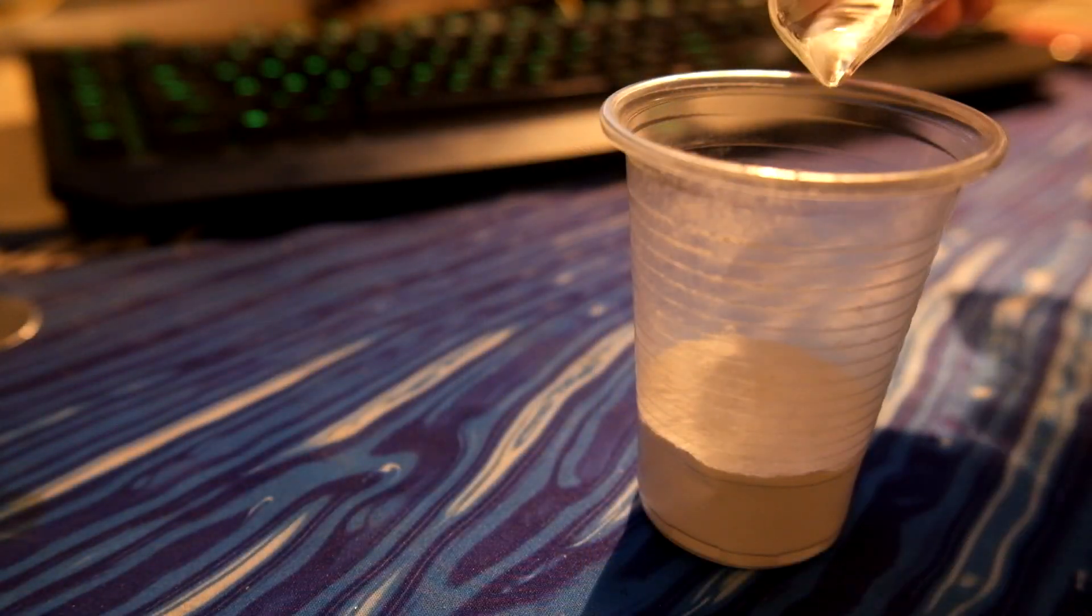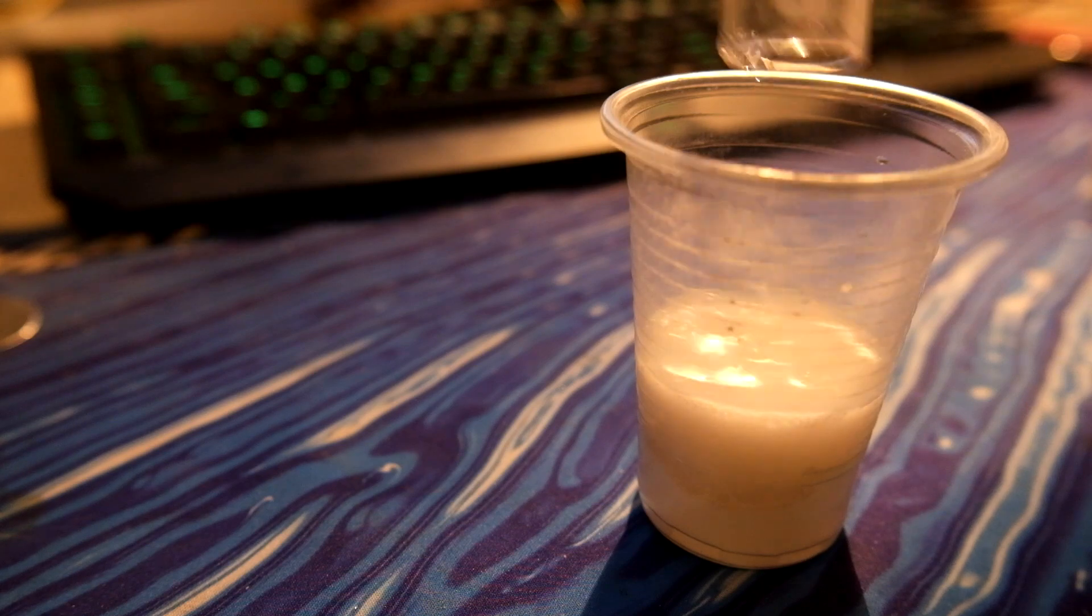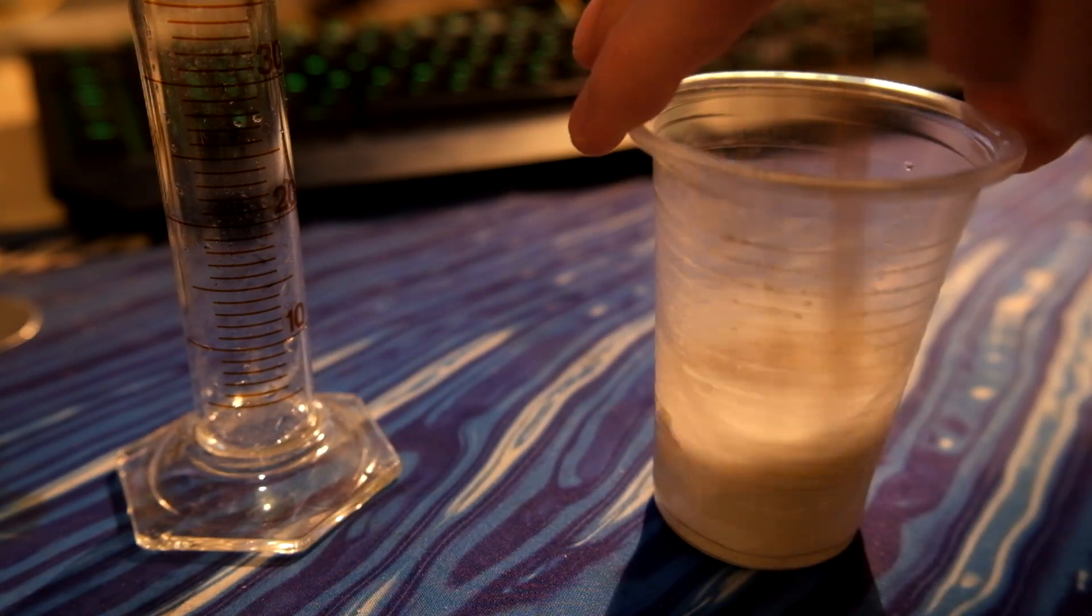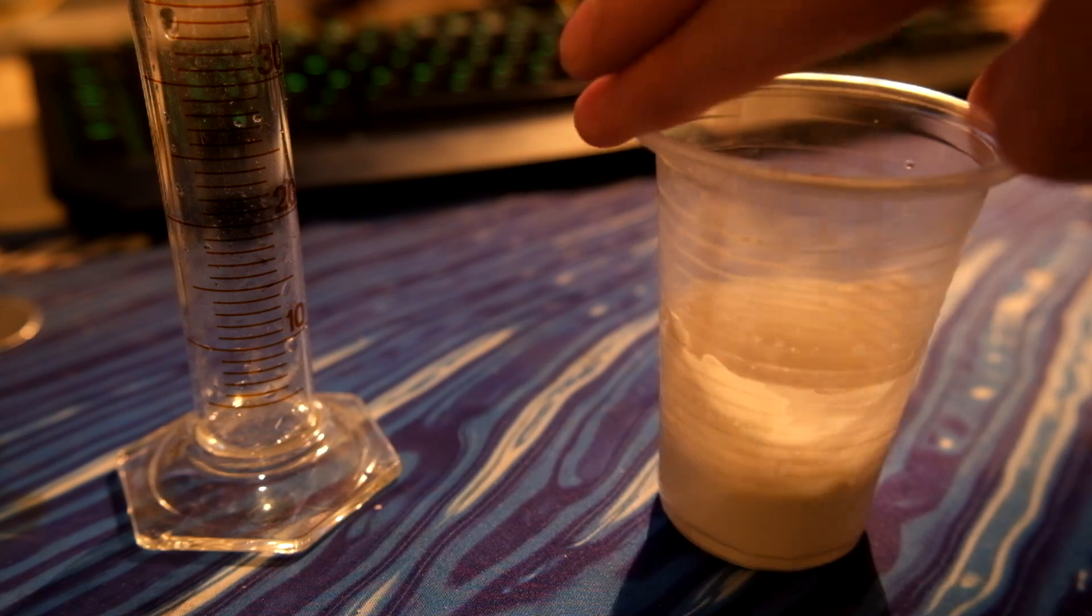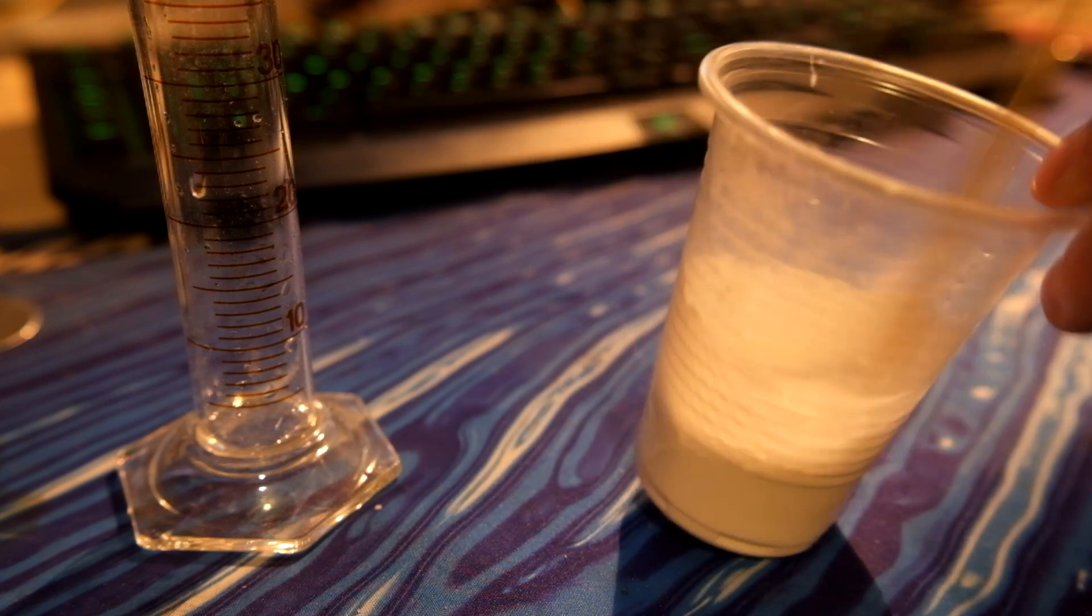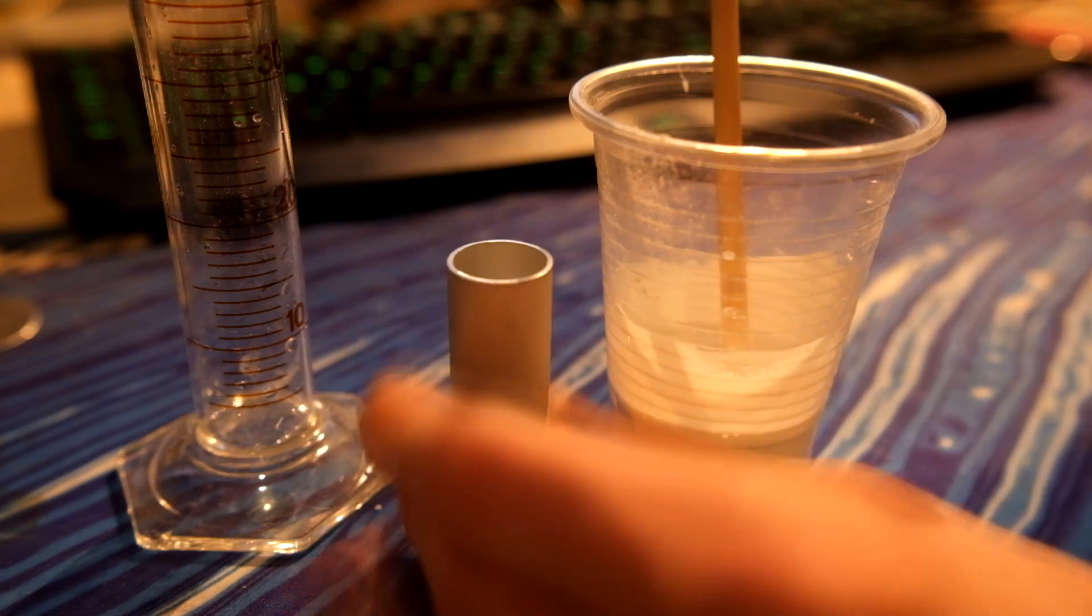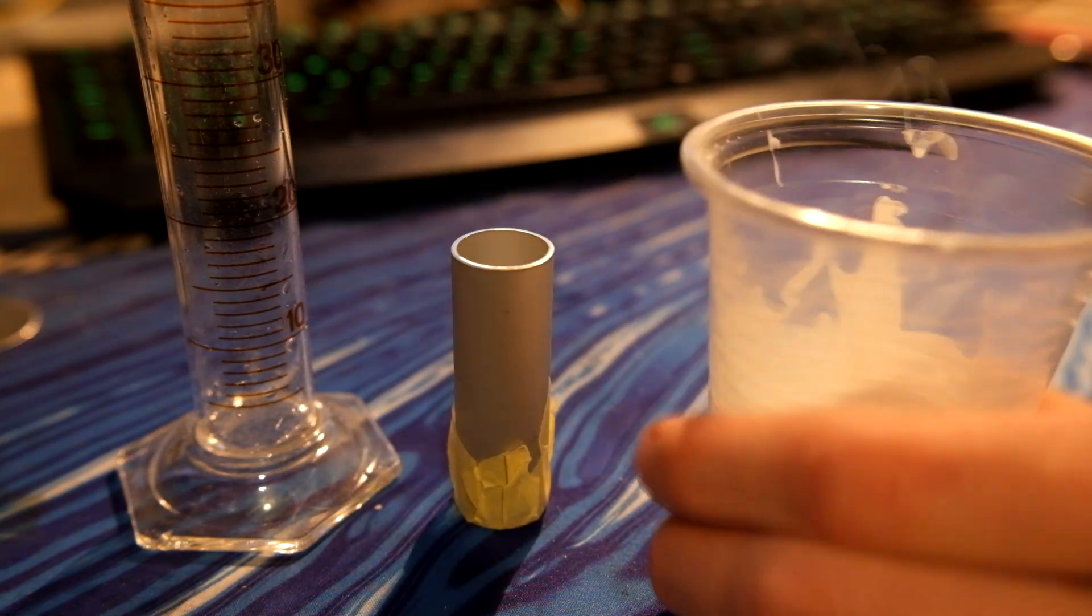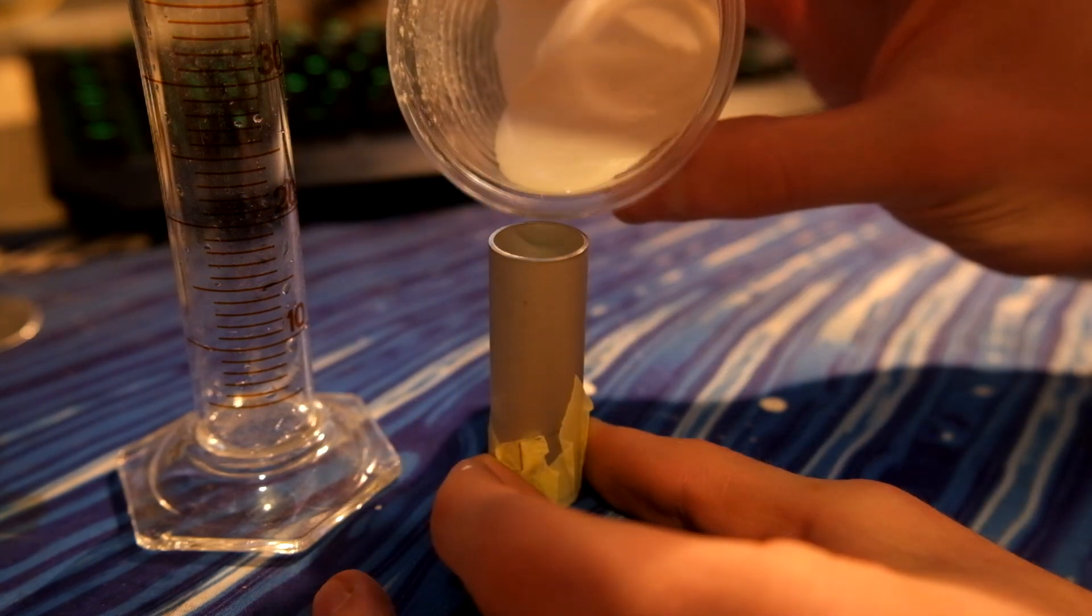After the tubes have been sealed with tape, I'm mixing up some gypsum plaster to use for the nozzle. Now this material isn't exactly ideal, because as the motor burns, it's going to erode away, the nozzle is going to get bigger, which decreases performance. But because this is our first rocket motor, we're not going to worry about that too much.